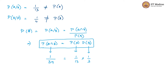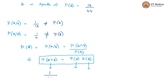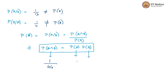If we check the independence condition: P of A intersection B is 1 by 44 — there is one ace of spades in 44 cards. Whereas P of A is 1 by 11 and P of B is 13 by 44. Their product is 13 by 484, which is not equal to 1 by 44. Therefore, in this case, the two events are not independent.